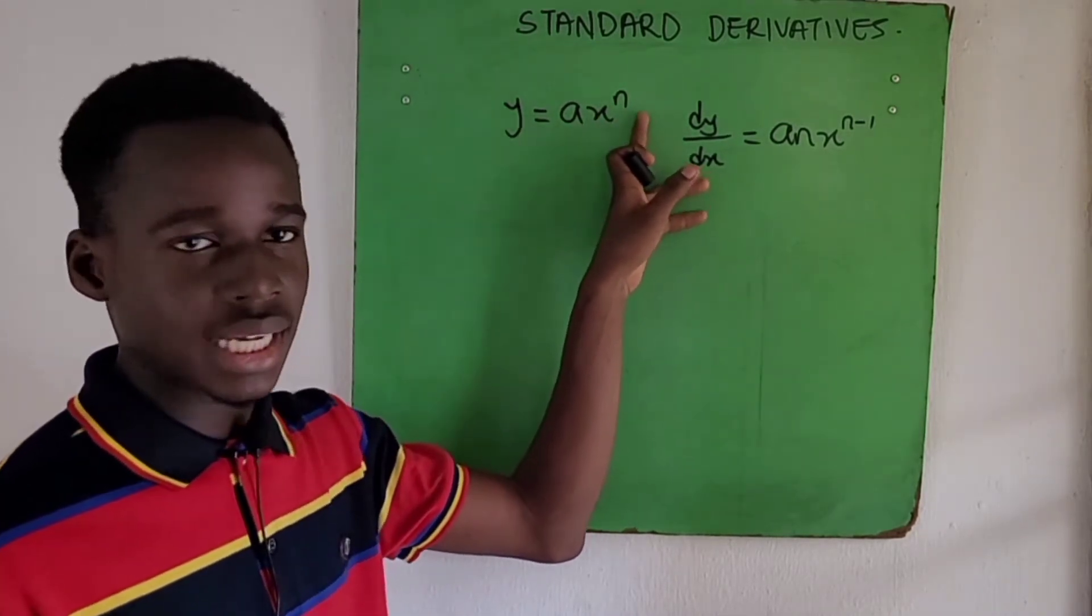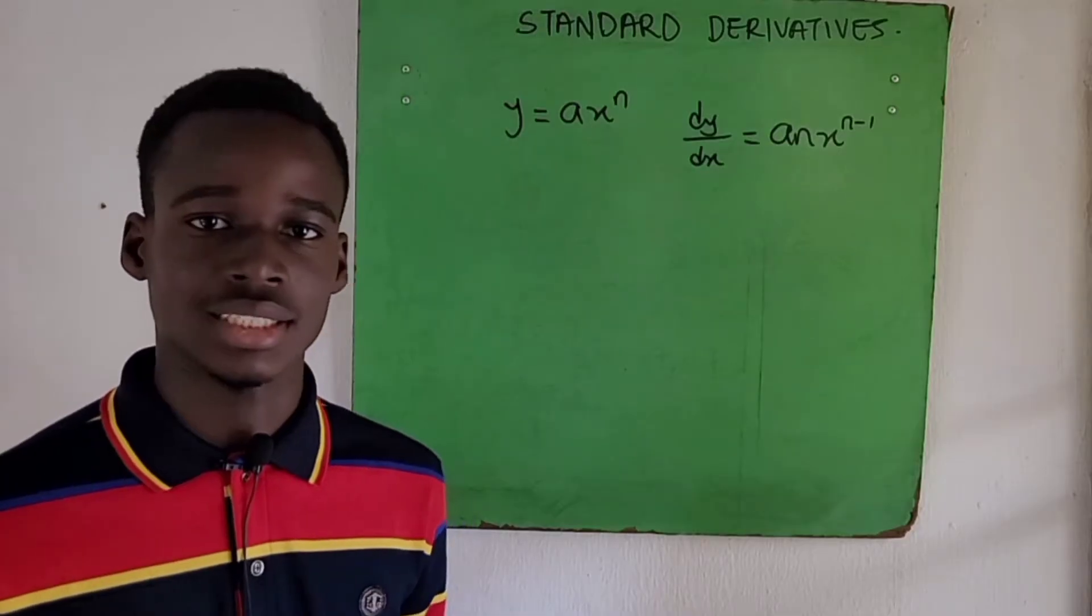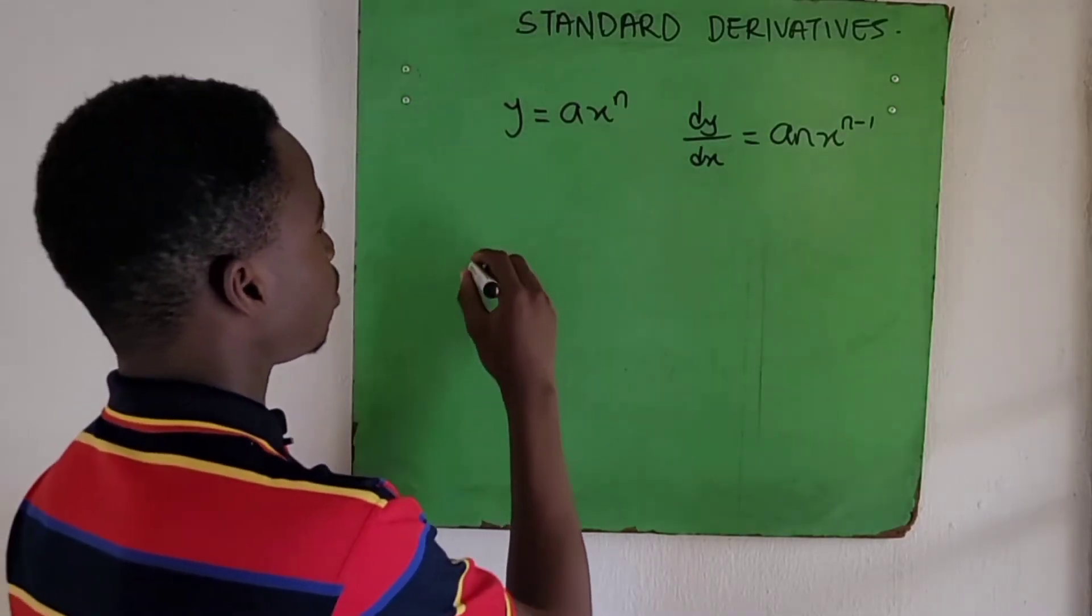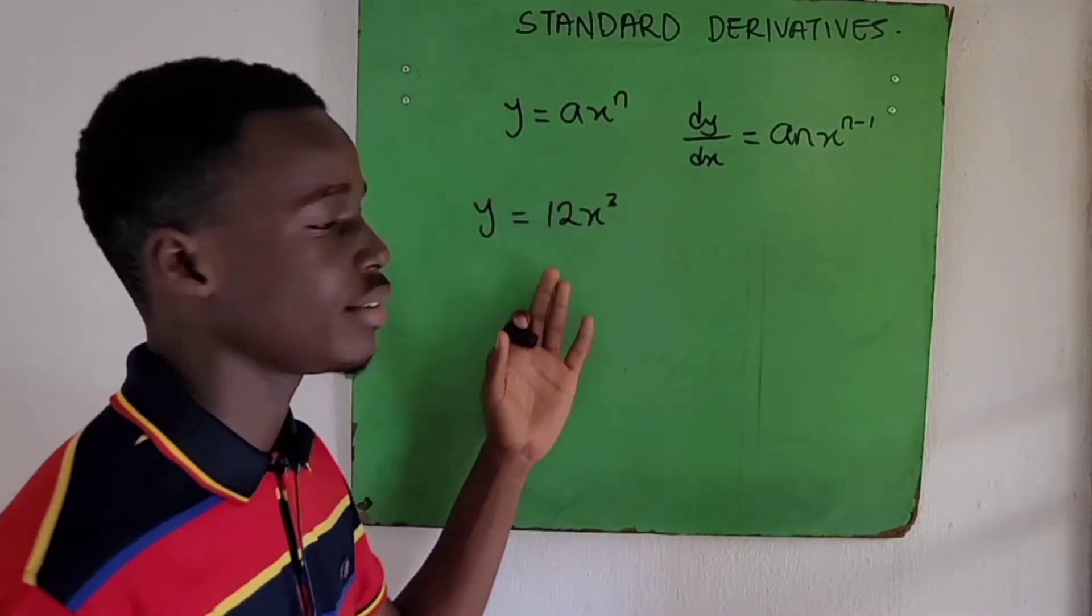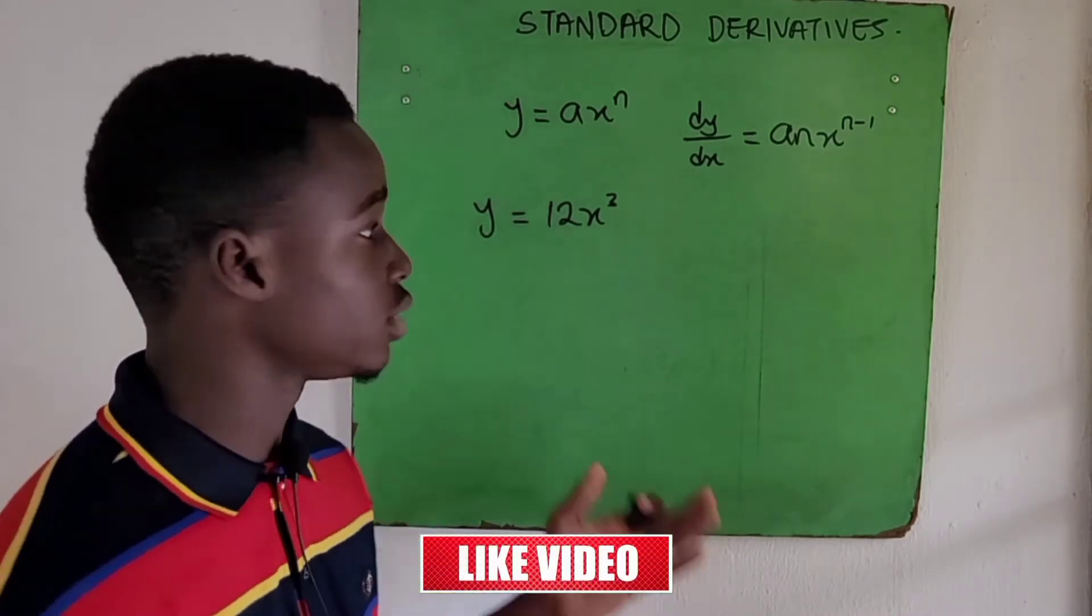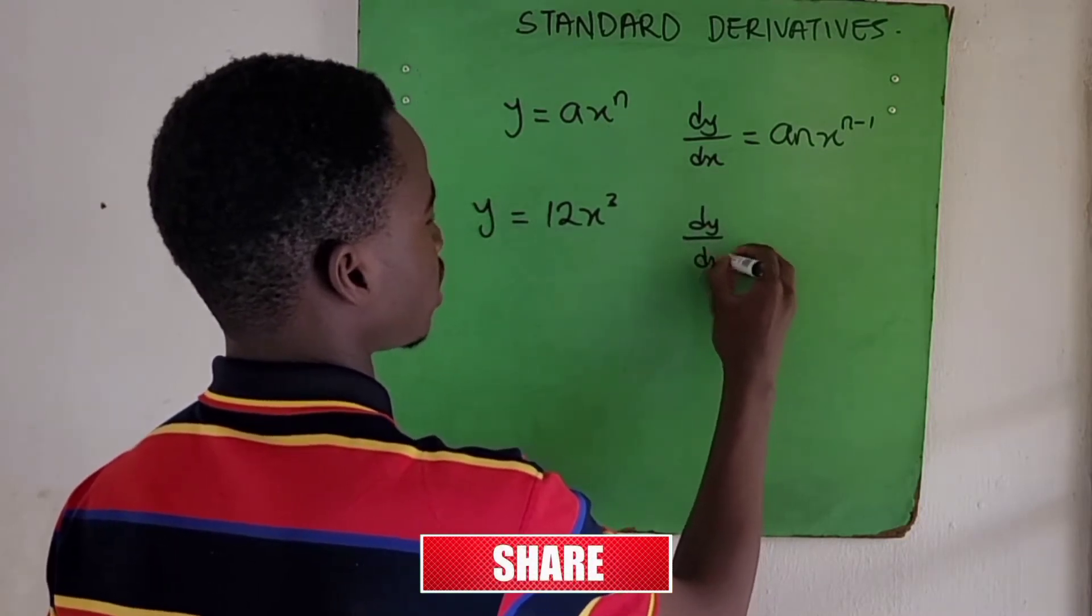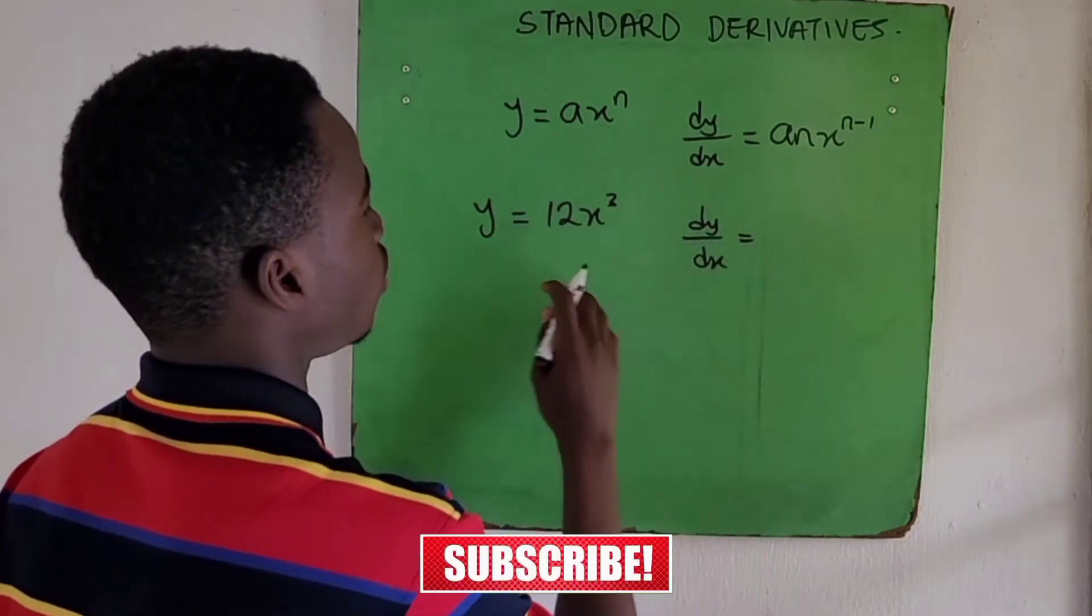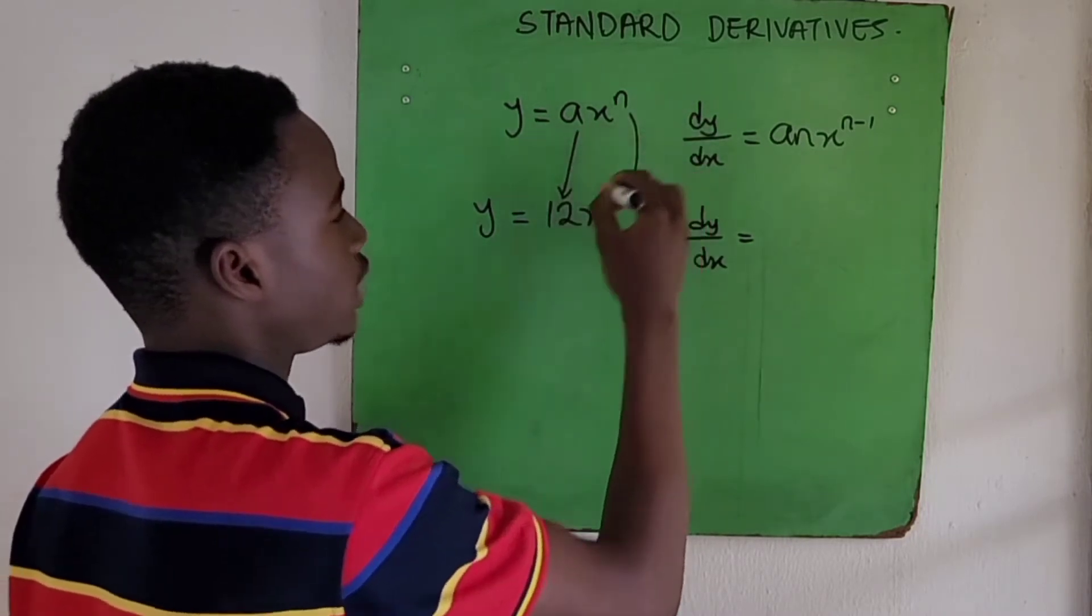So it's as simple as that. When you have a function like this, identify your a, identify your n, and then substitute. Let's solve an example. Suppose we have y = 12x³ and we've been asked to find the differential equation of this function. So dy/dx, from this we have our a to be 12 and our n to be 3.